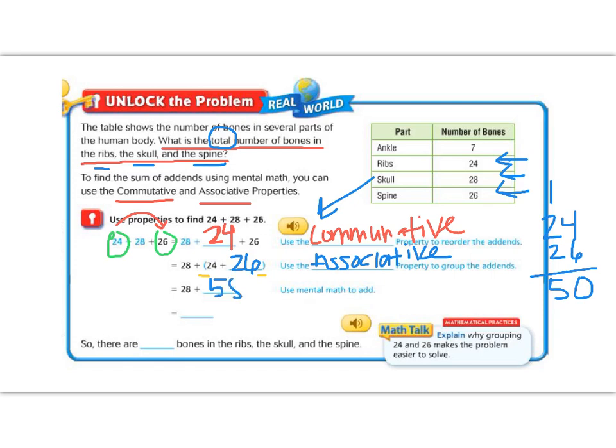Now 50 is a nice easy number to work with. I have 28 plus 50. I can do this in my head. 8 plus 0 is 8, and 5 plus 2 is 7. So my answer is 78. Instead of having to line all three of these numbers up and add down the rows, I can do it in my head. I now know that there are 78 bones in the ribs, the skull, and the spine. Great job, everyone!